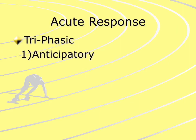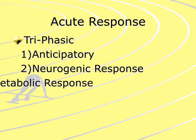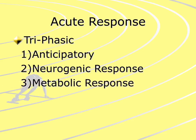But what happens when we have some sort of stressor in the ventilatory system? We end up having what's referred to as the triphasic response. The triphasic response is made up of the anticipatory set, the neurogenic response, and the metabolic response. All of these will lead to either a change in tidal volume or a change in respiration rate.